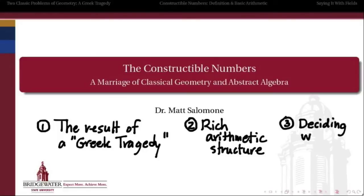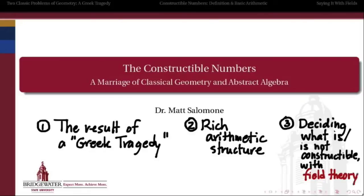And finally, we're going to look at the question of deciding whether or not a given number or given length is constructible with a compass and straightedge, or is not, using the tools of field theory, which is what makes this an abstract algebra question. So this really is, as the title suggests, a marriage between classical geometry and the abstract algebra that we're interested in for the purposes of our course.